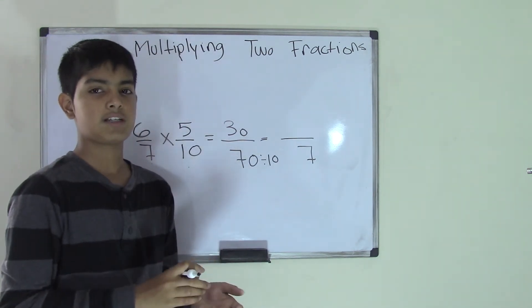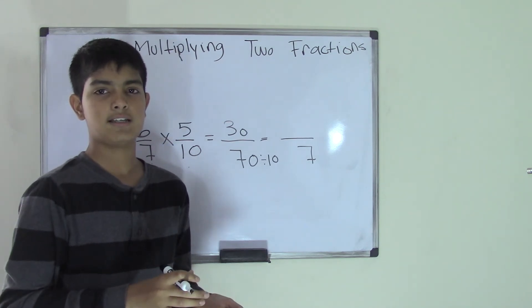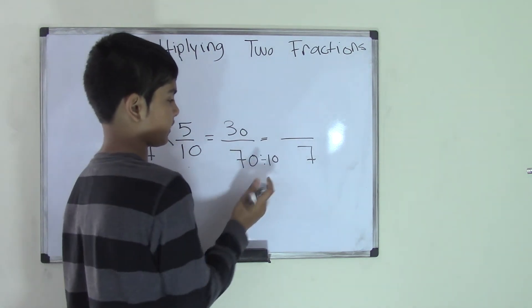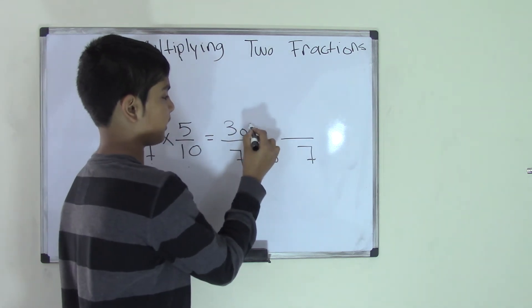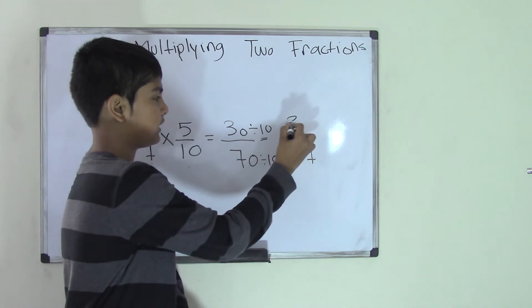Because 70 divided by 10—if you divide any number by 10, it will shorten it out. You cut the zeros. And now we do 30 divided by 10. And we know that 30 divided by 10 is 3.